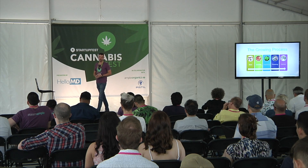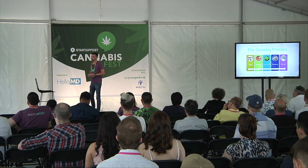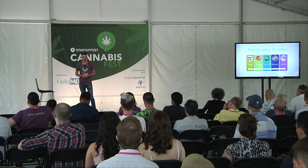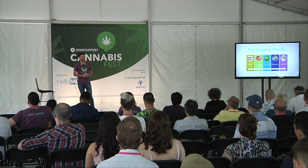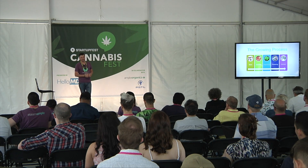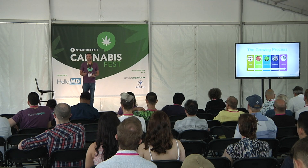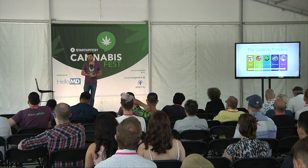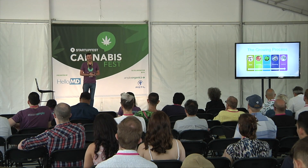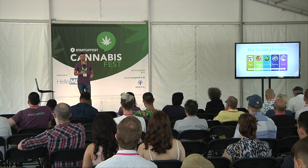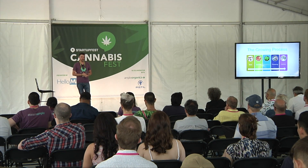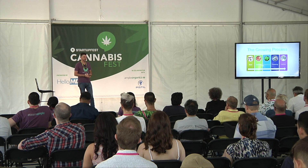What that means is that the lights are on for more than 12 hours a day. If the lights are on for more than 12 hours a day, chances are the plant is going to veg. If the lights are on for less than 12 hours a day, the plant is going to go into its flowering cycle and start producing cannabis.